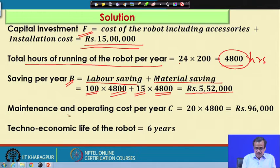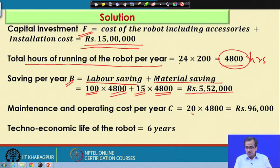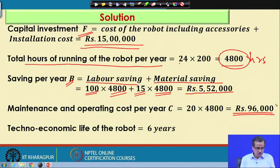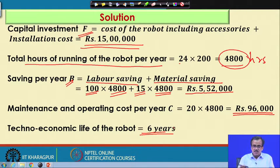Then, maintenance and operating cost per year is nothing but rupees 20 per hour. So, rupees 20 multiplied by 4800 — this is the maintenance and the operating cost — and this is coming to be equal to rupees 96,000. The techno-economic life of the robot is given as 6 years.